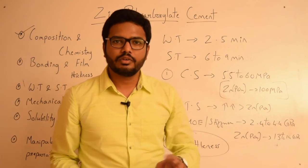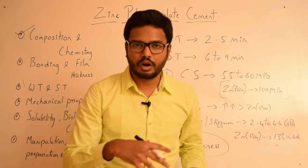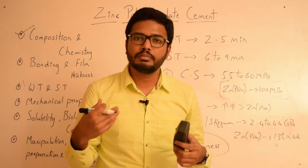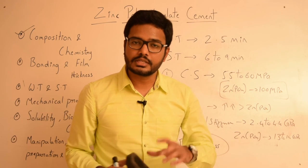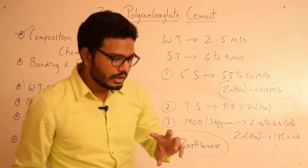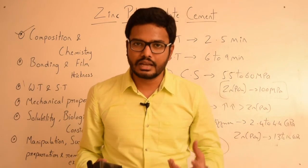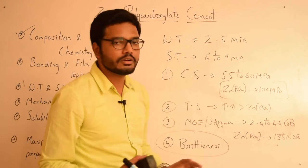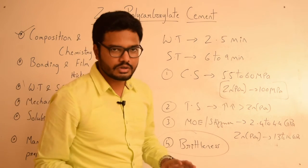Clinically, the brittleness property is important for removing excess cement. After luting a crown, excess cement can be removed easily with a sharp instrument if the cement is more brittle. However, since zinc polycarboxylate cement is less brittle and more pseudo-plastic or flexible, it is much more challenging to remove excess cement. This is an important clinical correlation of the brittleness property of zinc polycarboxylate cement.